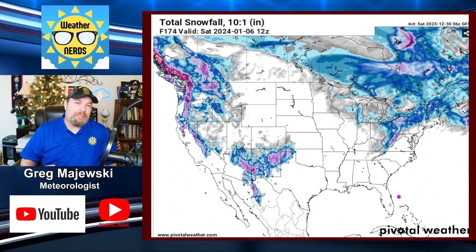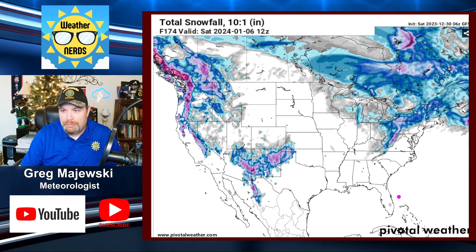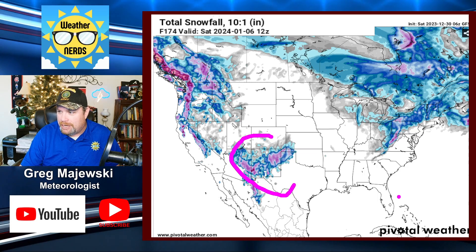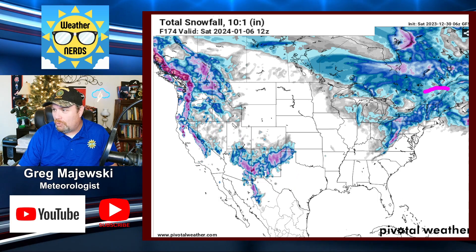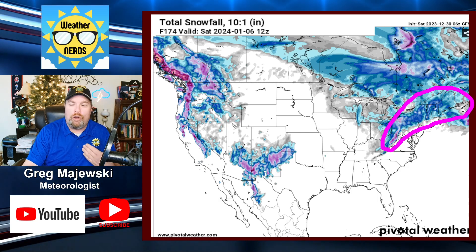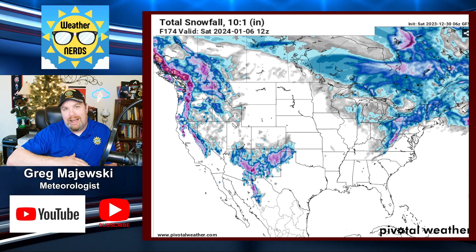Let's wrap up by looking at where potential snow could fall. Over the next seven days — and that's all that really matters for snow — we get a little snow across areas of the Southwest, some storm systems providing snow across the Intermountain region and the Sierra Nevada on the West Coast, and a little bit across New England and the Appalachians over the next seven days. Nothing overly dramatic.